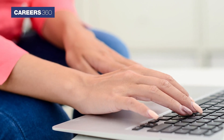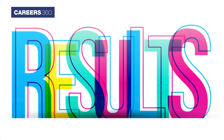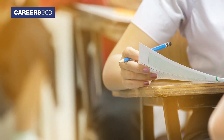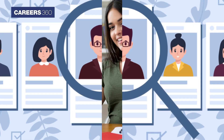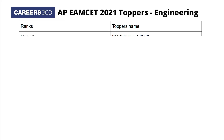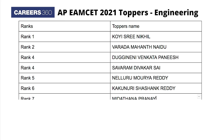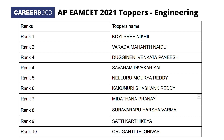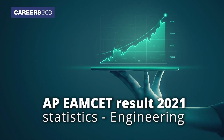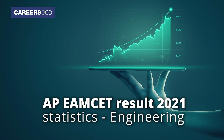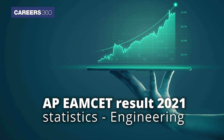Download the result for future references. Along with the declaration of the result, the Exam Conducting Authority has also released the list of toppers. Candidates can check the list of AP EAMSET toppers from the table flashing on the screen. Now let's have a look at the AP EAMSET result 2021 statistics.